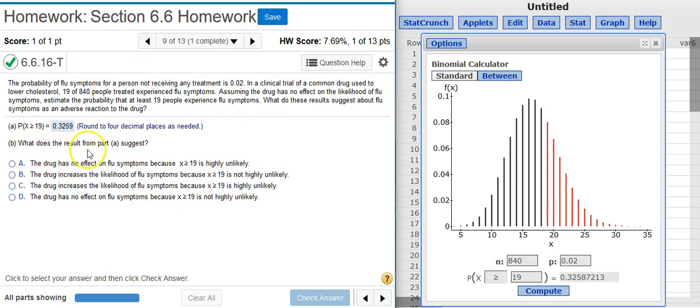Now, part B of this problem asks, what does the result from part A suggest? This one's a little tricky for a lot of students. And I admit, it's a little tricky for me too, because sometimes the logic that these statisticians use makes you feel like you're wrapping your brain around a tree. But let's go through each one of these answer options one at a time to see what we can make of this. Answer option A says, The drug has no effect on flu symptoms because X greater than or equal to 19 is highly unlikely. Well, the drug doesn't have an effect on flu symptoms. That part is true. Because remember, we did this probability distribution on the assumption that the drug has no effect on the likelihood of flu symptoms. So that's our assumption. So to be true with that assumption, we're going to have to suggest that the drug has no effect on flu symptoms.